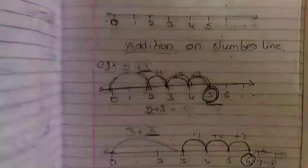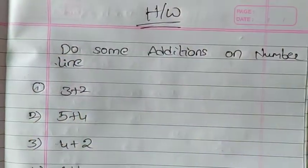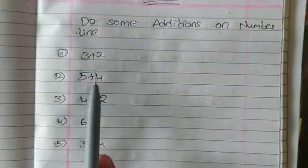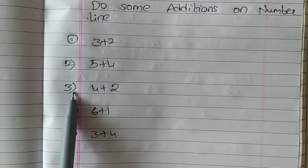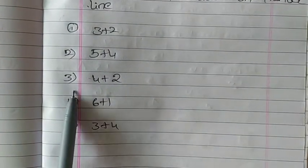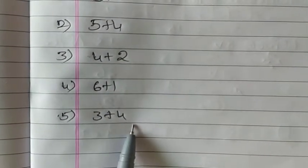In the same way, you have to do some additions on number line in your homework. 1st one is 3 plus 2, 2nd one is 5 plus 4, 3rd one is 4 plus 2, 4th one is 6 plus 1, 5th one is 3 plus 4. Easy homework. Complete your homework. Thank you.